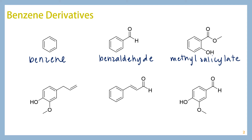The next one is methyl salicylate. Methyl salicylate is a derivative of salicylic acid, which is found in willow bark. Another derivative of salicylic acid is used in aspirin. Methyl salicylate itself is an analgesic compound. Our next one is eugenol, which is found in clove oil.